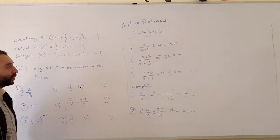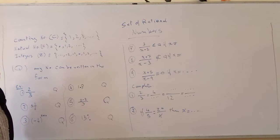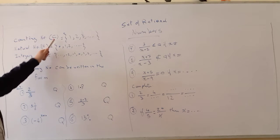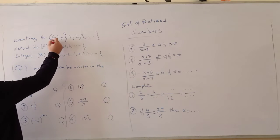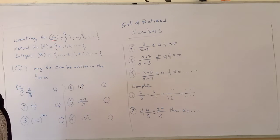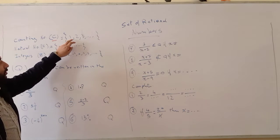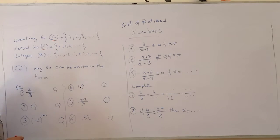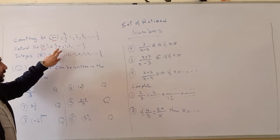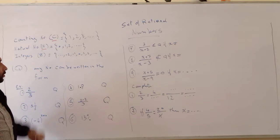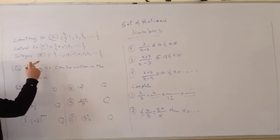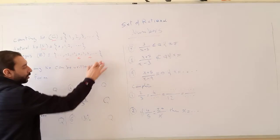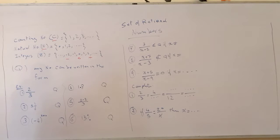Set of rational numbers. We have studied different kinds of sets of numbers before, such as counting numbers, denoted by the letter C — the numbers that we count with, starting with 1, 2, 3 and so on. Natural numbers, denoted by the letter N, start with 0, 1, 2, 3 and so on. The set of integers are positive and negative whole numbers, including 0.